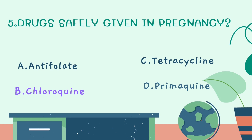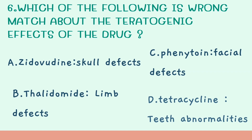Sixth question: which of the following is the correct match about teratogenic effects of drugs? Options: Zidovudine - skull defects, Thalidomide - limb defects, Phenytoin - facial defects, Tetracycline - teeth abnormalities. The correct answer is Thalidomide causing limb defects (phocomelia). Tetracycline causes teeth discoloration and bone deformities. Phenytoin causes cleft palate. Zidovudine causing skull defects is incorrect.